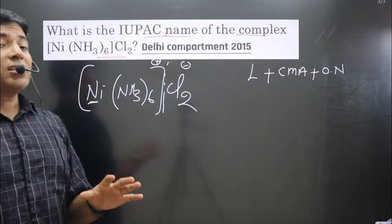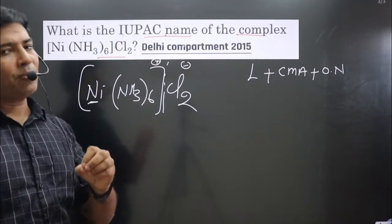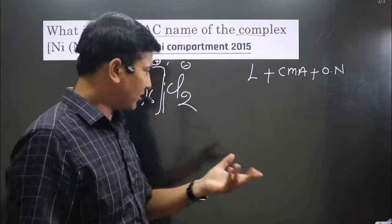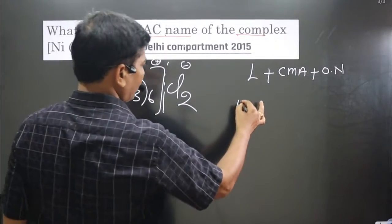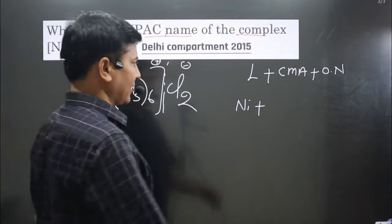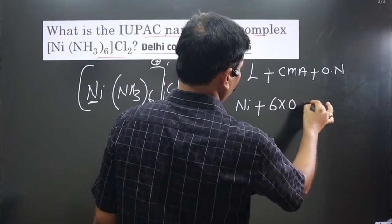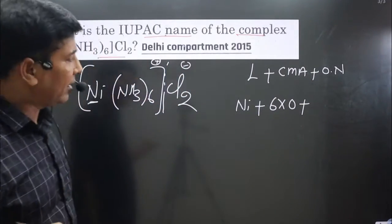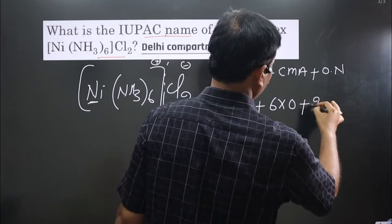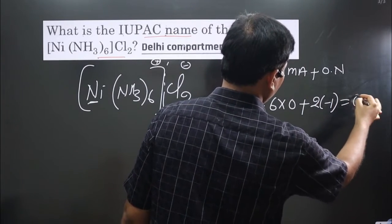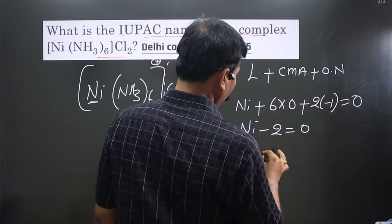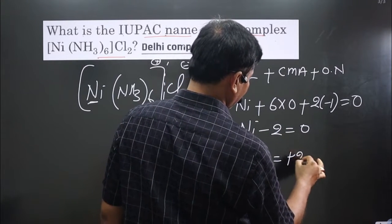Next, we calculate the oxidation number of the central metal atom, as we need it for the name. For nickel: let nickel's oxidation number be x. NH3 is neutral so its contribution is 6 × 0 = 0. There are two chloride ions, each with −1 charge. The overall complex is neutral, so: x + 0 + (2 × −1) = 0, giving x = +2. Nickel is in the +2 oxidation state.